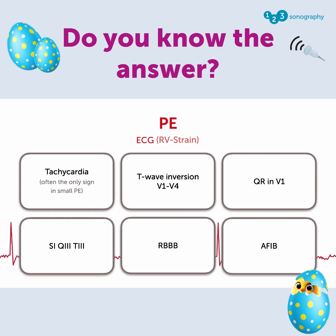You can see T wave inversions in leads V1 to V4, a QR pattern in V1, an S1Q3T3 pattern, a right bundle branch block can appear, and the onset of atrial fibrillation can be triggered.